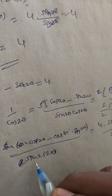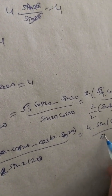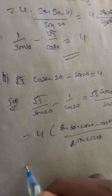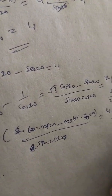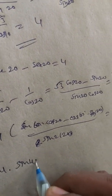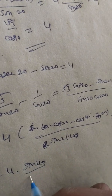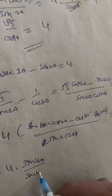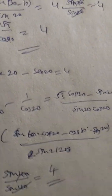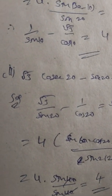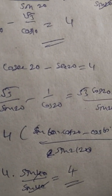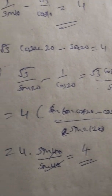So we get 4 times sin(60° - 20°) = 4 times sin(40°), divided by sin(40°). Sin(40°) cancels, giving 4. Therefore √3/sin(20°) minus 1/cos(20°) equals 4.